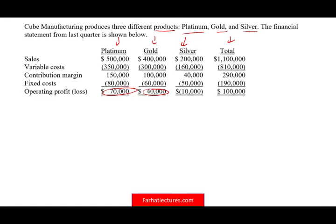What happens if we eliminate the silver division? The sales and variable costs of that division will be gone. We have a contribution margin of $40,000 that's going to be lost. The question then becomes: what's going to happen to the $50,000 of fixed cost? If that fixed cost will go away, maybe we'd consider removing the division. But if it has to be allocated elsewhere — to gold or platinum — we need to determine what portion is avoidable versus reallocated.